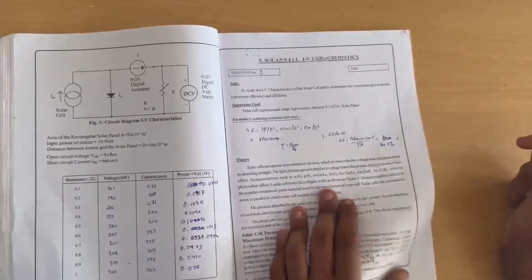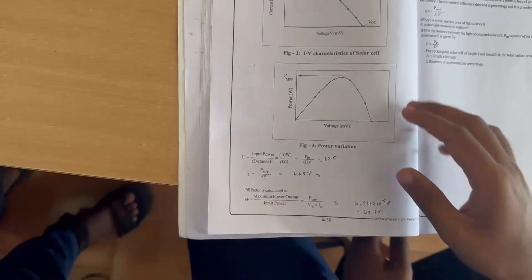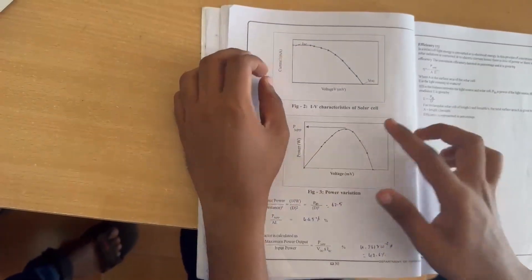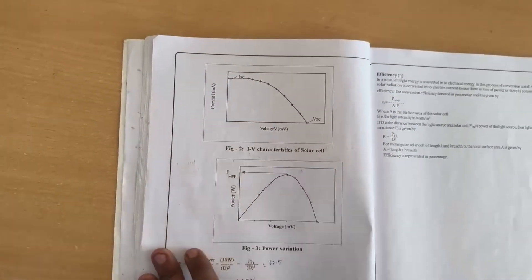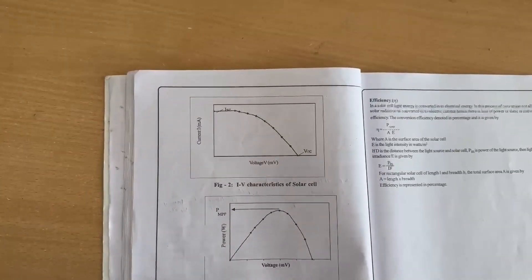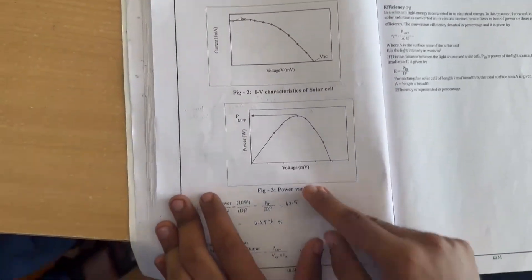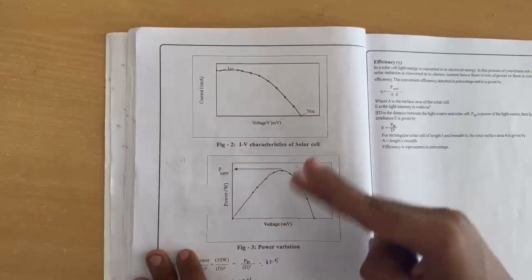IV characteristics depend on the graph. You put current (I) on the Y-axis and voltage (V) on the X-axis. We are going to plot two graphs today: one is the power variation and one is the IV characteristics, which are both aims of this experiment.